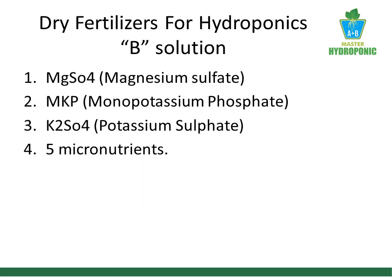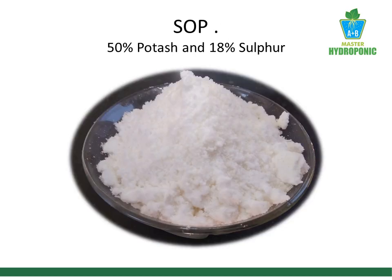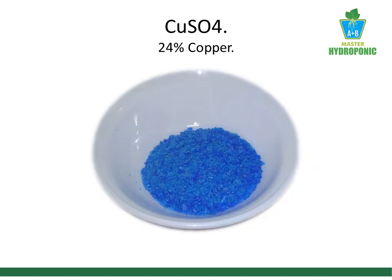In Solution B we add 3 macronutrients and 5 micronutrients. First is magnesium sulfate, containing 9.5% magnesium and 13% sulfur. Second is sulfate of potash, containing 50% potash and 18% sulfur. Third is monopotassium phosphate as a source of phosphorus, containing 52% phosphorus and 34% potash. For micronutrients, we use copper sulfate containing 24% copper.